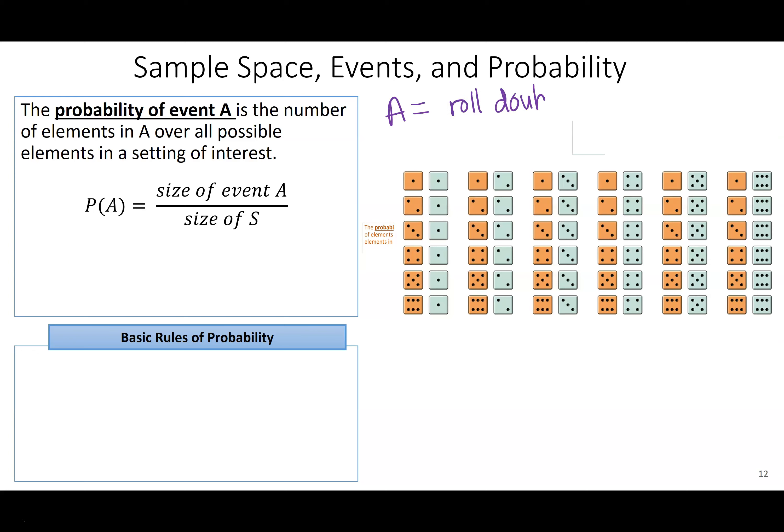So once I've defined my event, rolling doubles, I can determine the probability of that happening. The size of event A, if I'm looking at rolling doubles, I can roll one one, two two, three three, four four, five five, or six six. My size is six. There are six different ways I could accomplish this. So probability of doubles, I could get six out of—and then I would count all of the possibilities—there are 36 different rolls. So that reduces to one sixth.